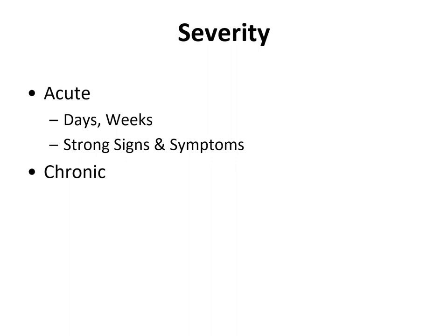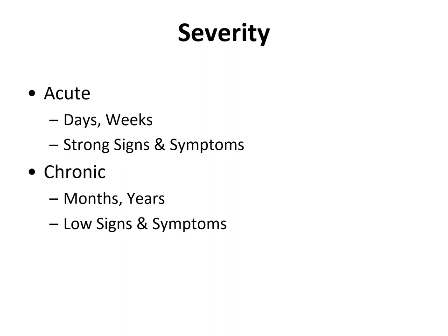Chronic disease happens over a long period of time — months to years — and the signs and symptoms are relatively low or mild. For a chronic disease you will have it for a very long time, but with a low-grade fever or a low amount of pain. Hepatitis is a chronic infectious disease.